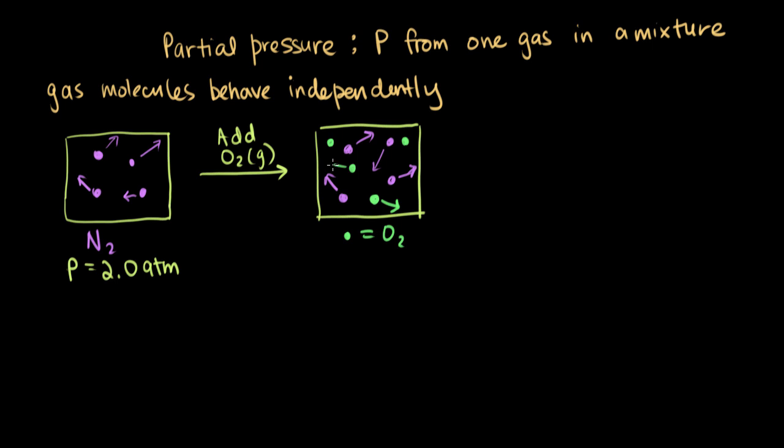And they're also moving with some velocity. So now we have more gas molecules than we had originally, and our pressure has gone up as a result. So the pressure of the gases in our container, which I will call the total pressure, is now 2.5 atmospheres.